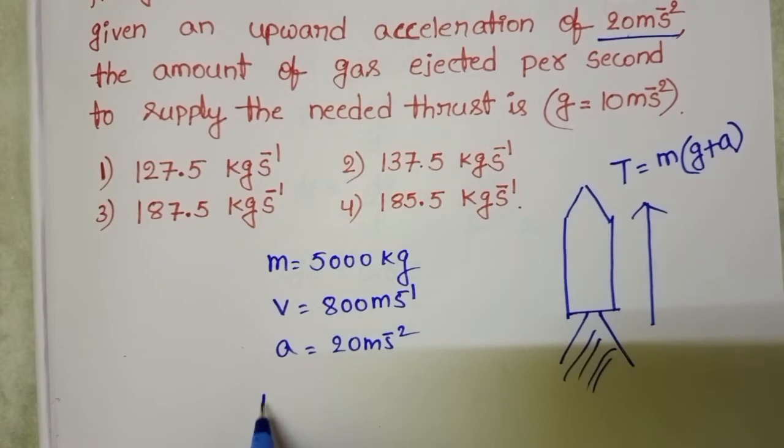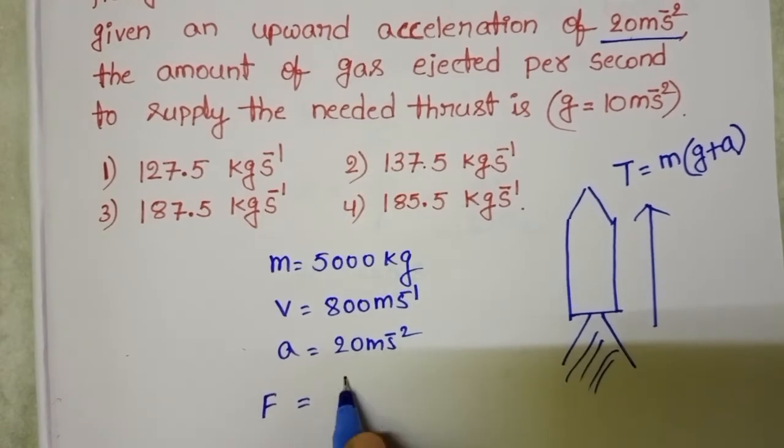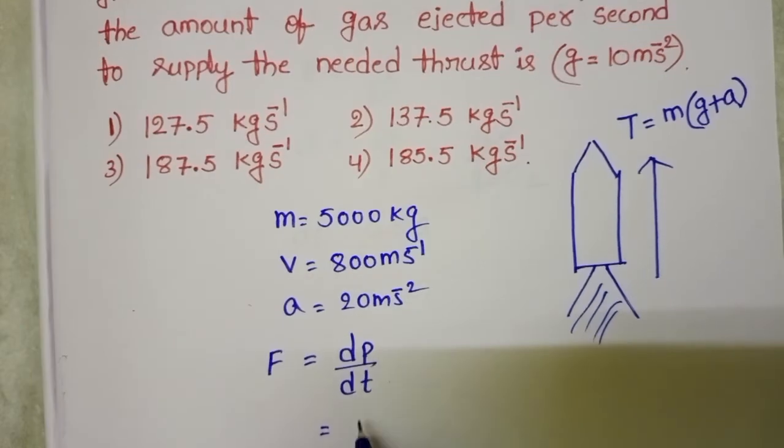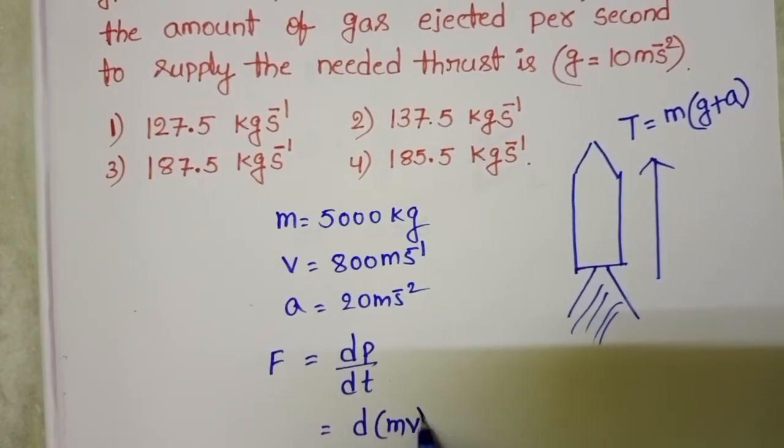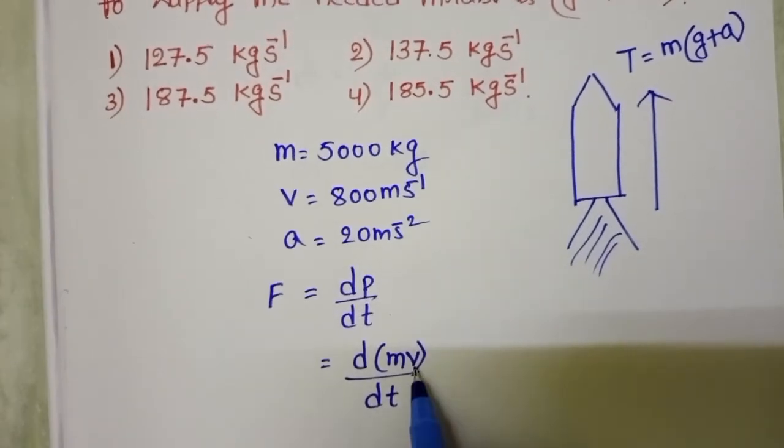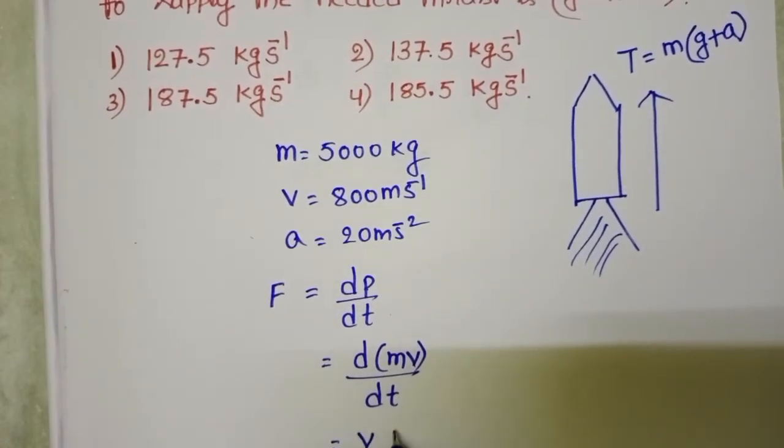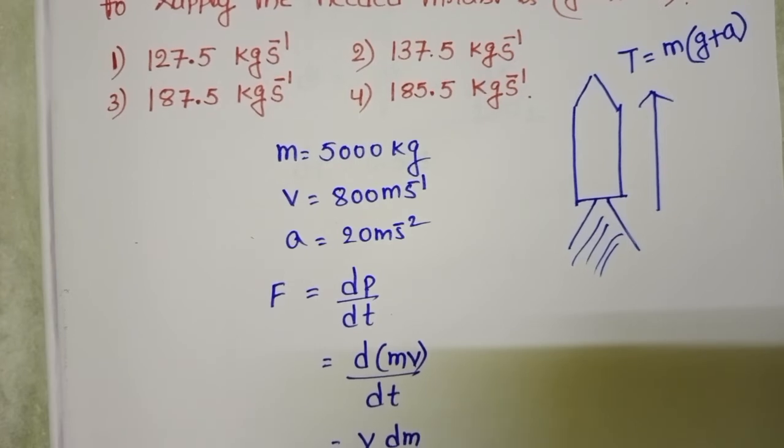We know force equals rate of change of momentum. In place of momentum, take mass into velocity. Here, V is constant. So, V into dm by dt.